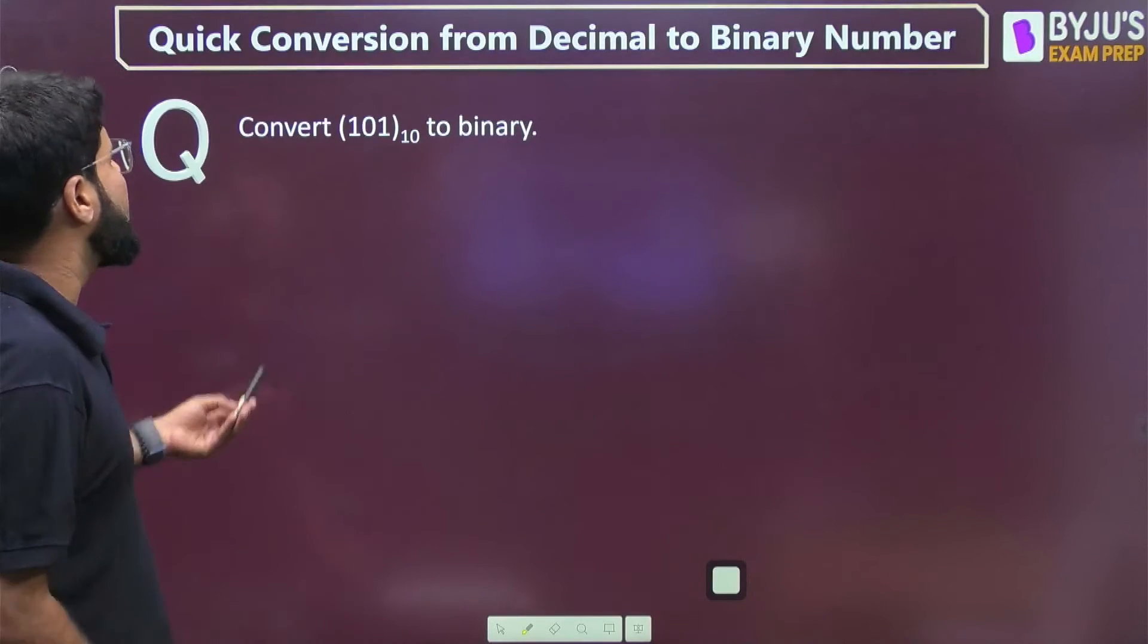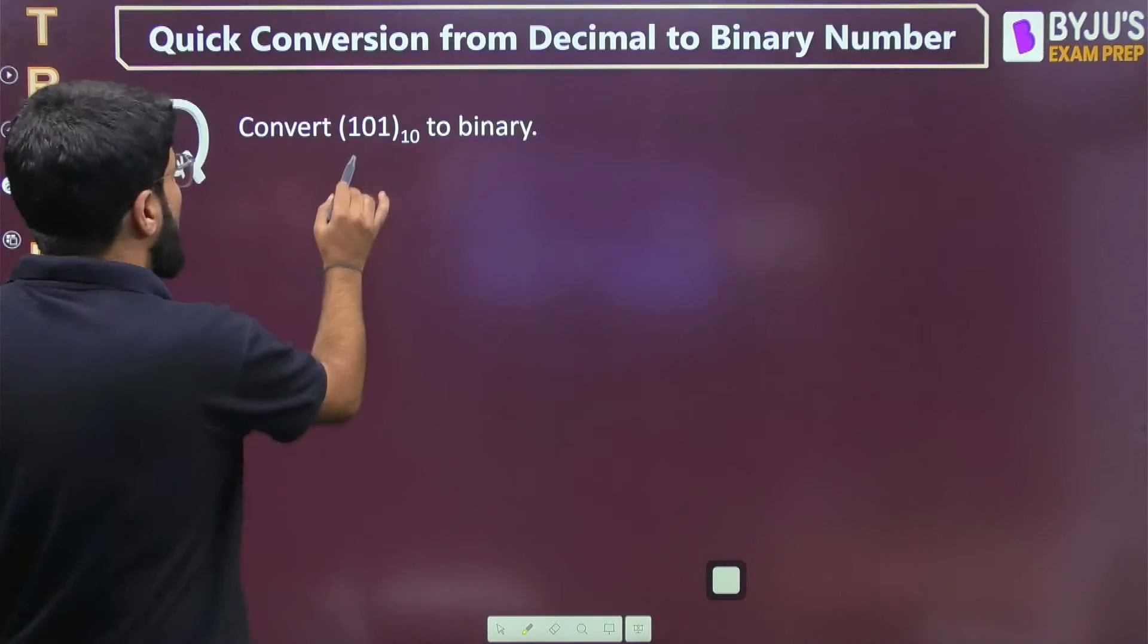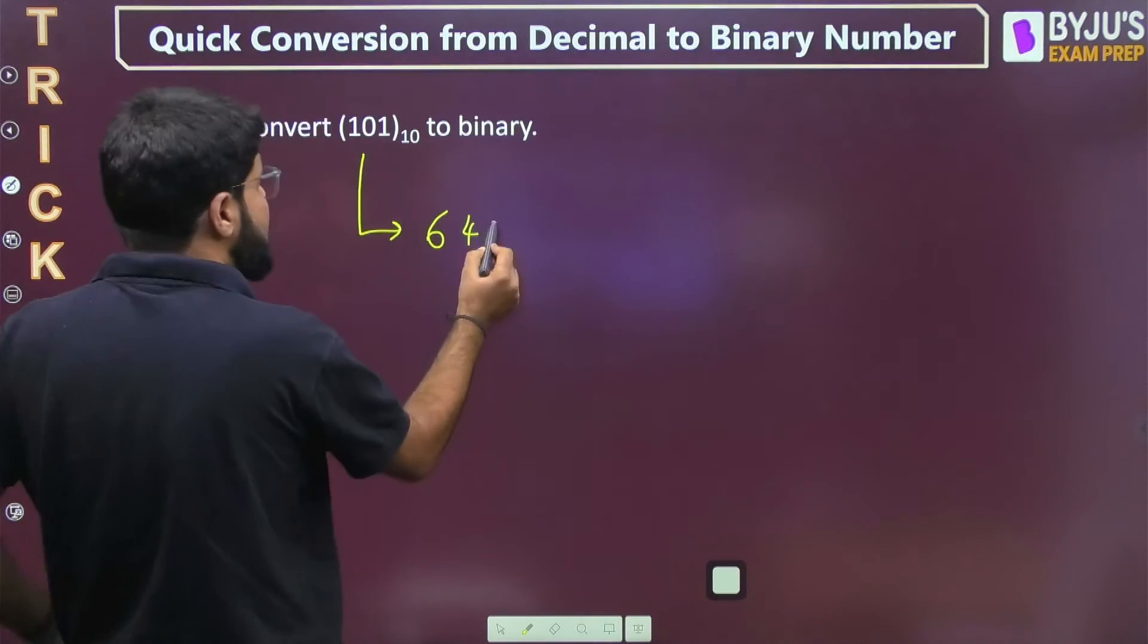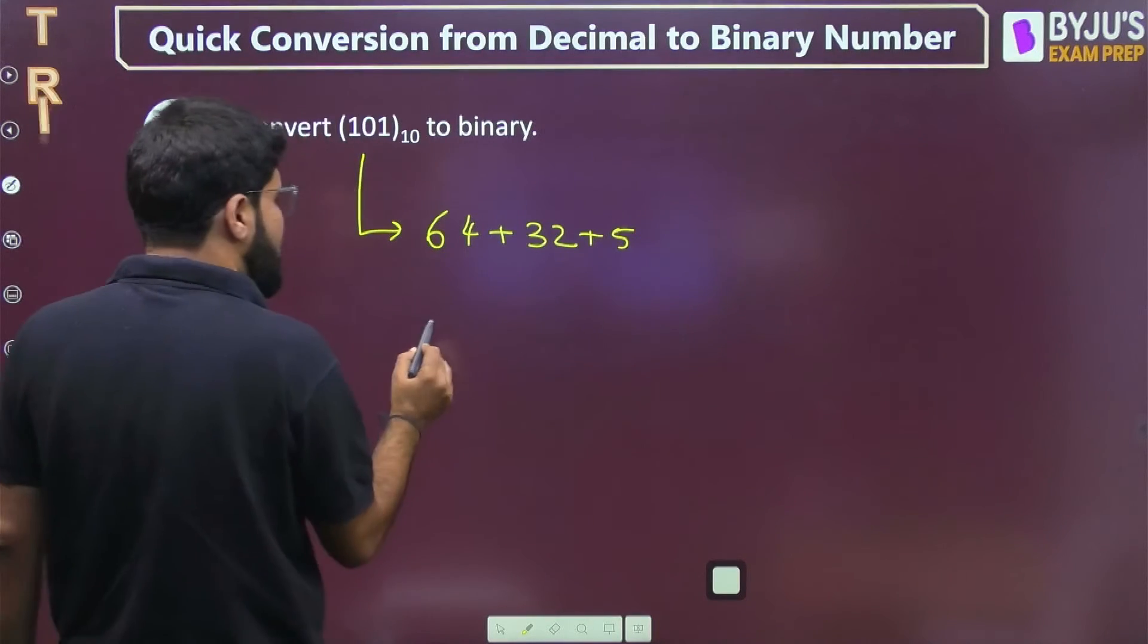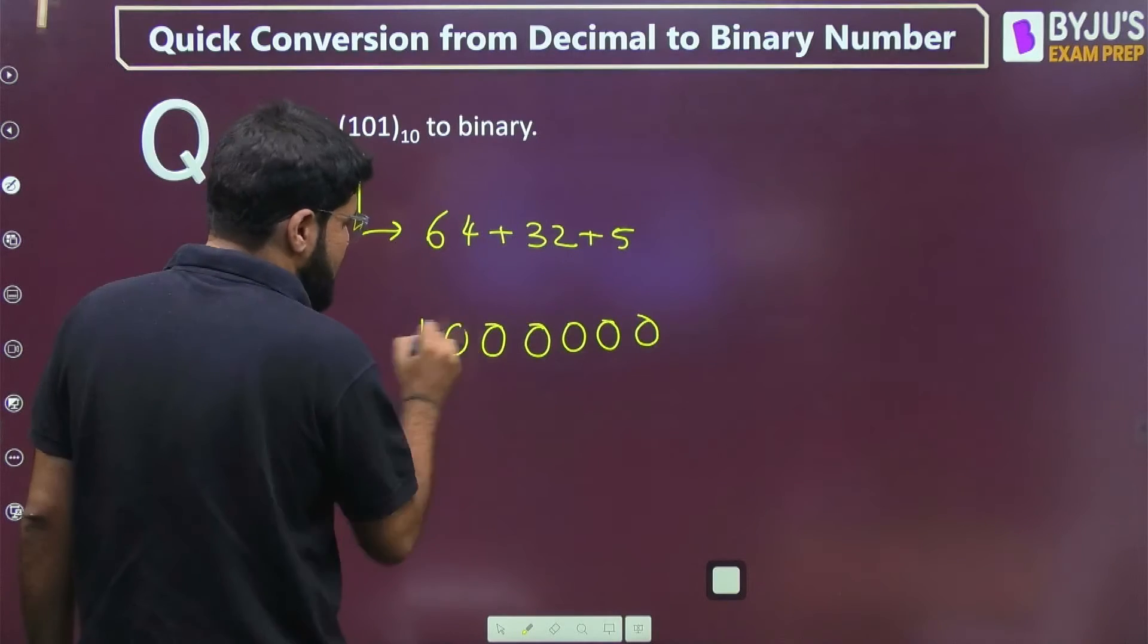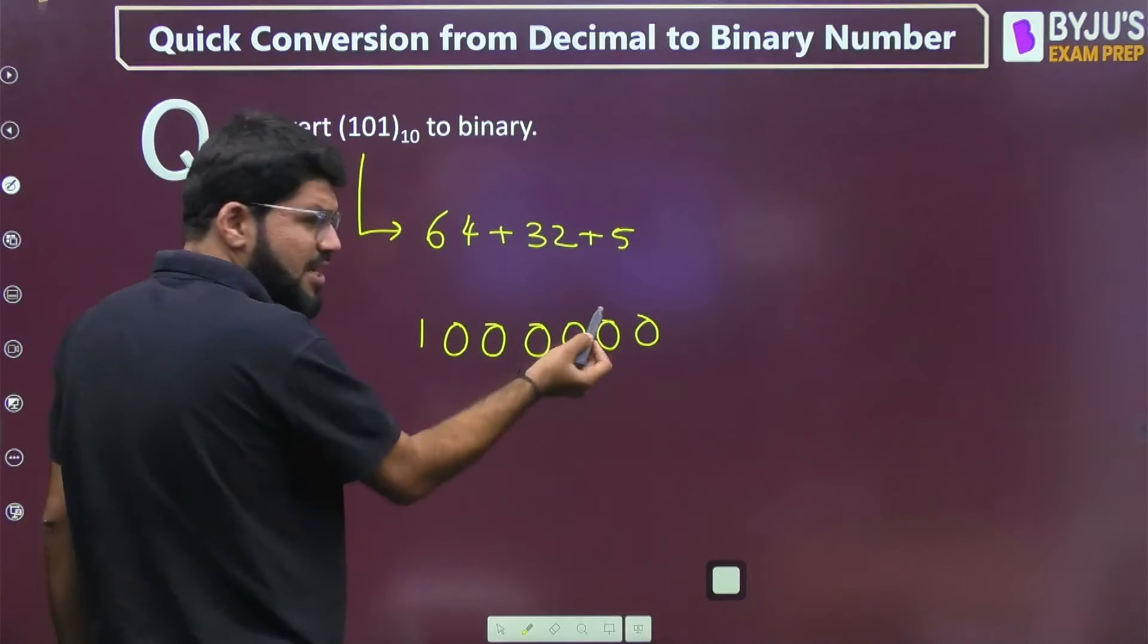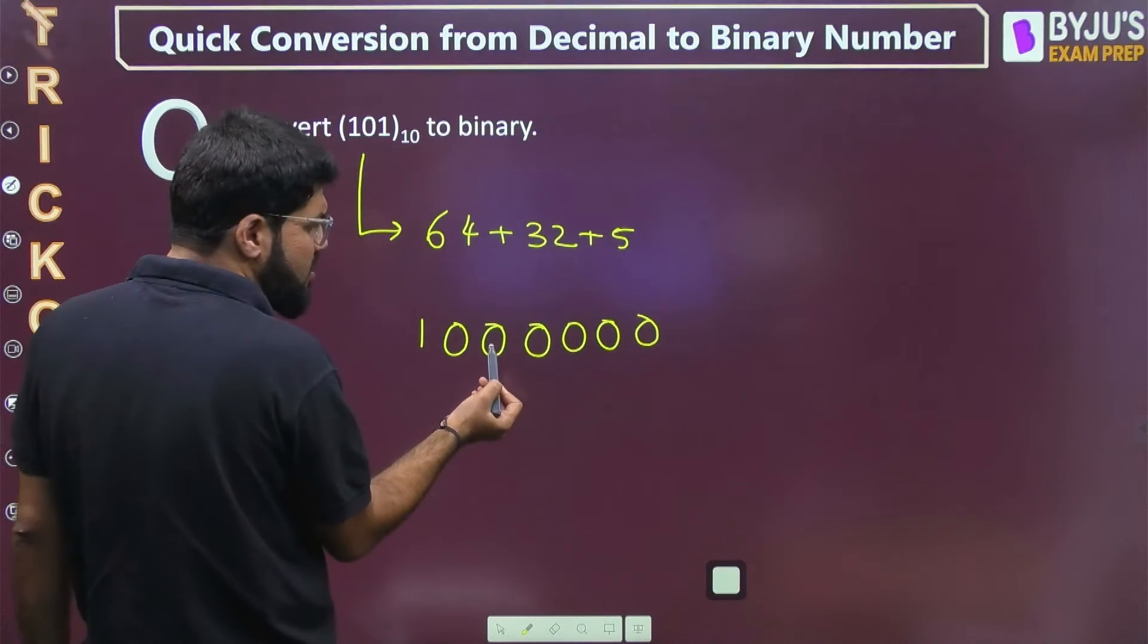I am going to break 101 into powers of 2. That's 64 plus 32 plus 5. Now what is 64? That's 2 power 6, so 1 and 6 zeros. 32 will have 5 zeros. When you add, a 1 will be overlapped here, 0 plus 1 will be 1.